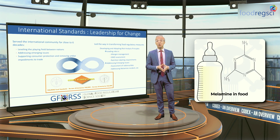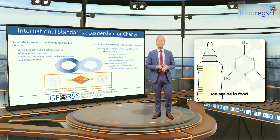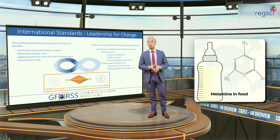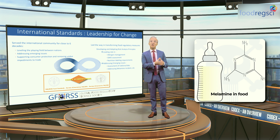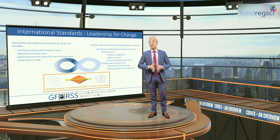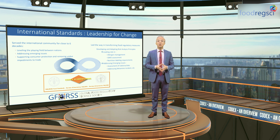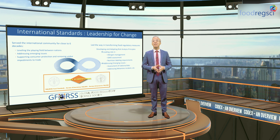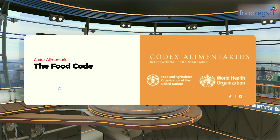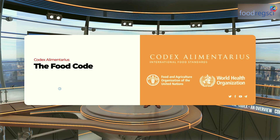A similar situation occurred in 2009, when the maximum levels developed by Codex for melamine in food allowed differentiation between adulterated products and those that were not. This helped mitigate possible chaos in international trade of processed foods due to the multiplication of national standards for melamine in food containing dairy ingredients that could have been adulterated by melamine. The Codex Alimentarius means literally 'the food code.'